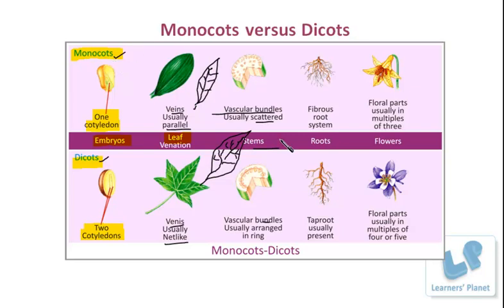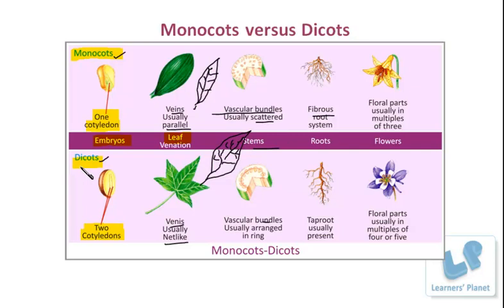The next thing we can observe with the naked eye is the roots. If the roots are fibrous, then it must be a monocot plant. And if there is a tap root system — one prominent root with smaller fibers — then such a taproot is the characteristic feature of a dicot plant.